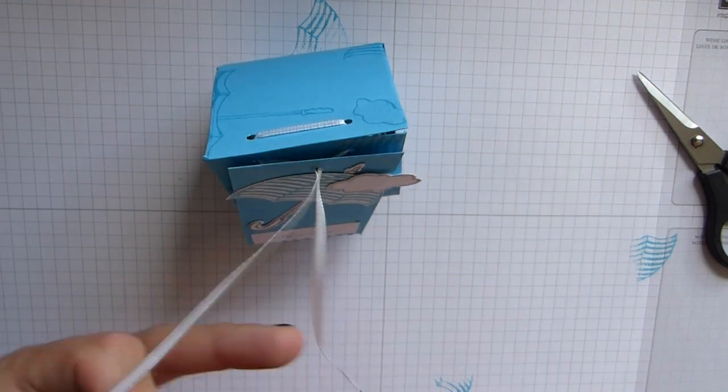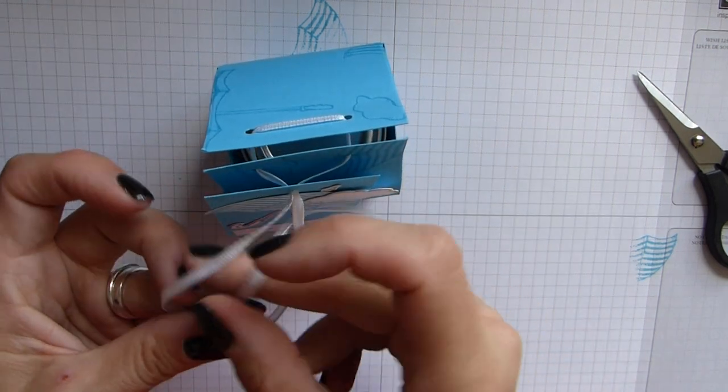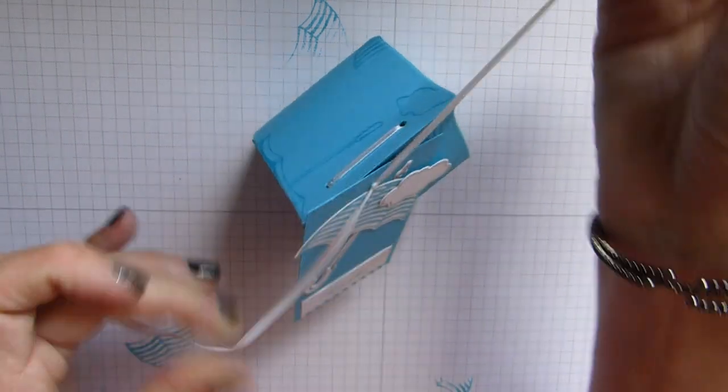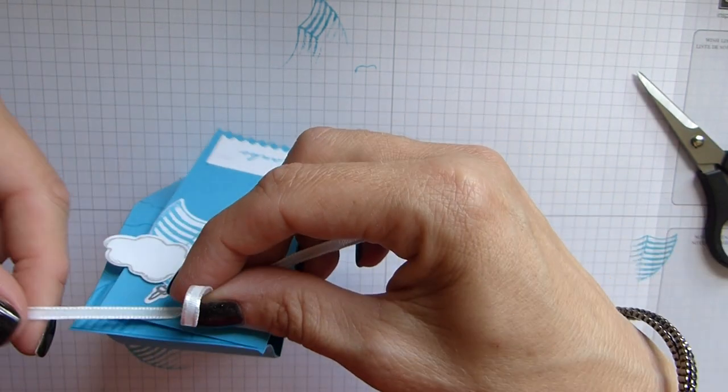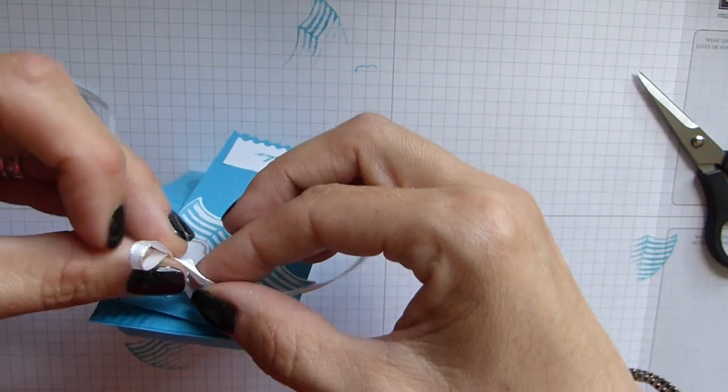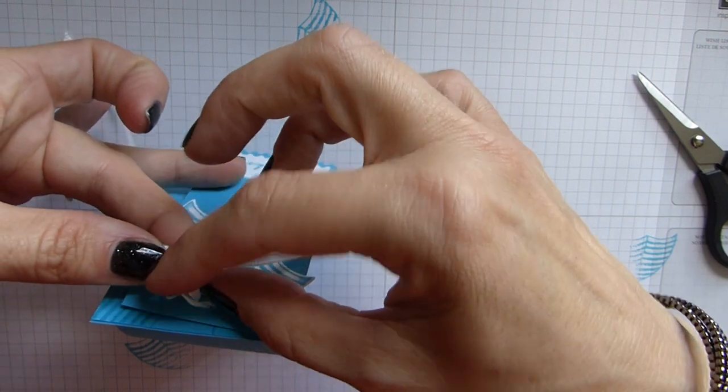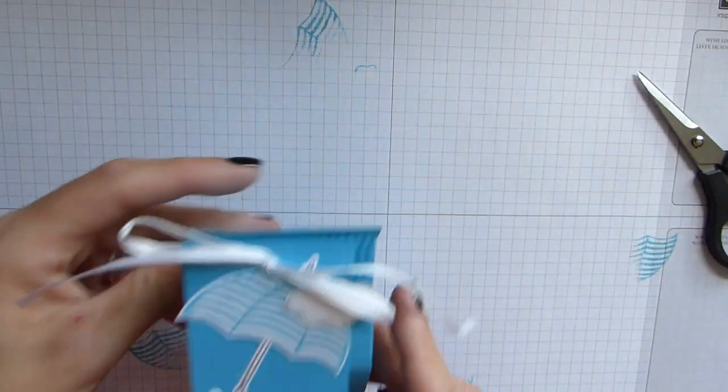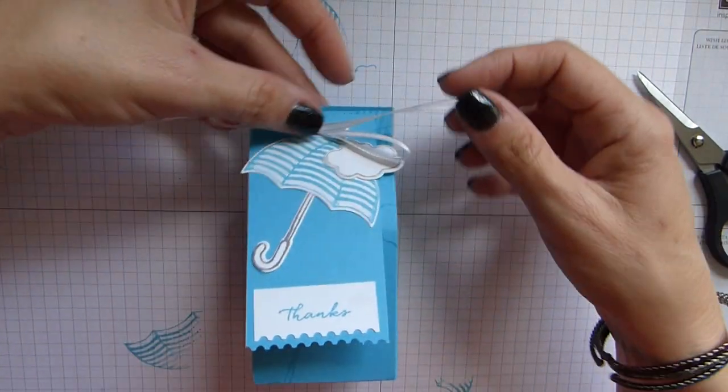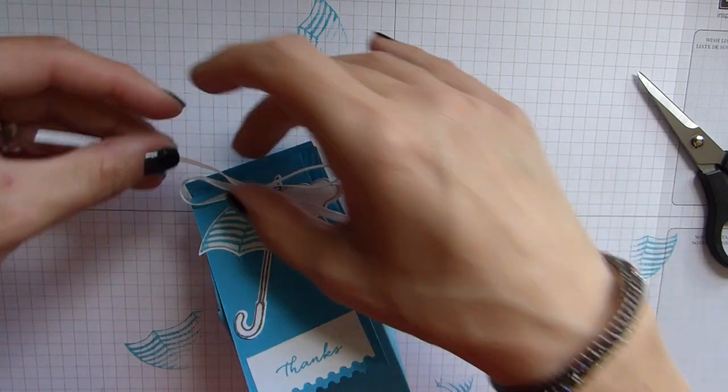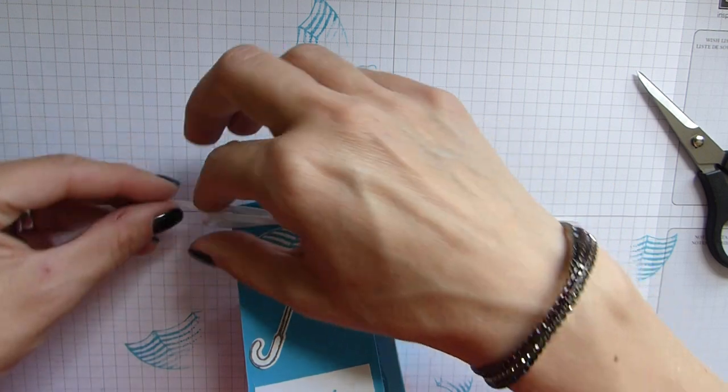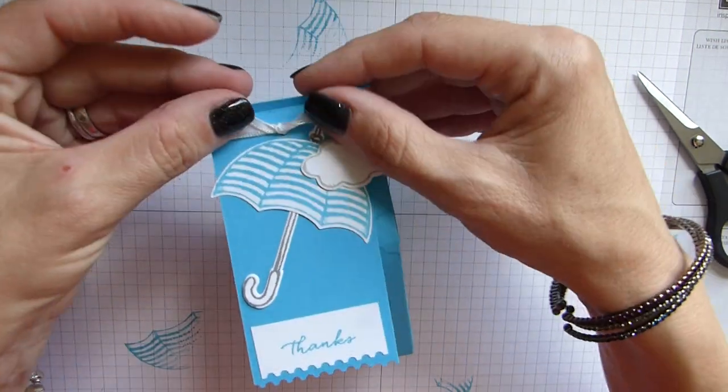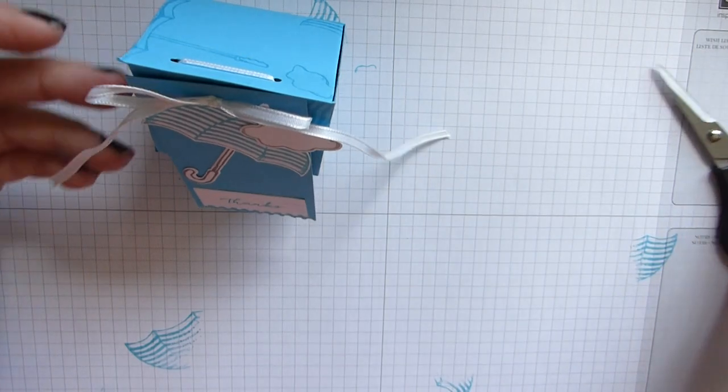Then just tie your bow. As you know, I do my bows upside down, back to front, whichever way you call it. Then I'm just going to make the bow a little smaller. And then I'm just going to trim off the excess.